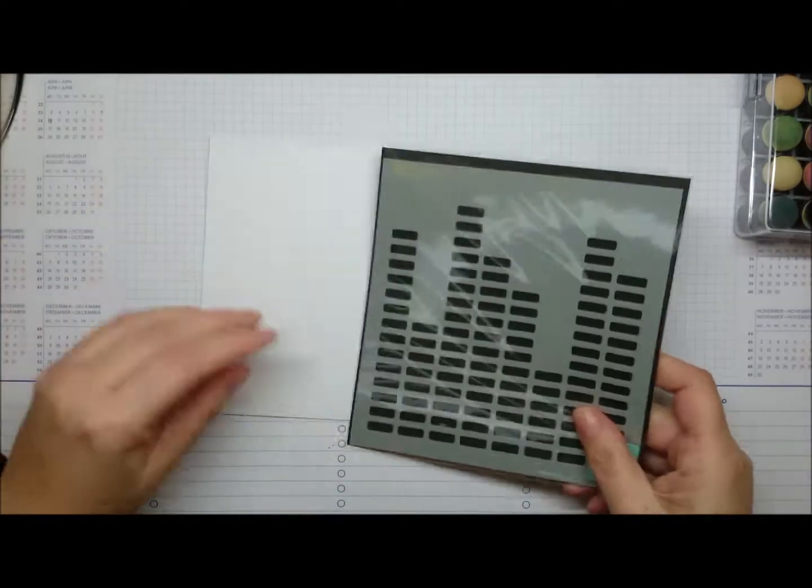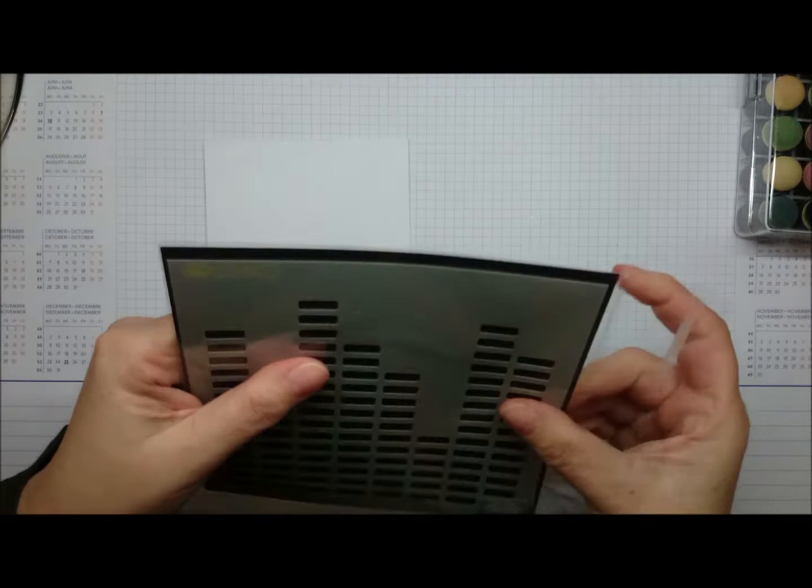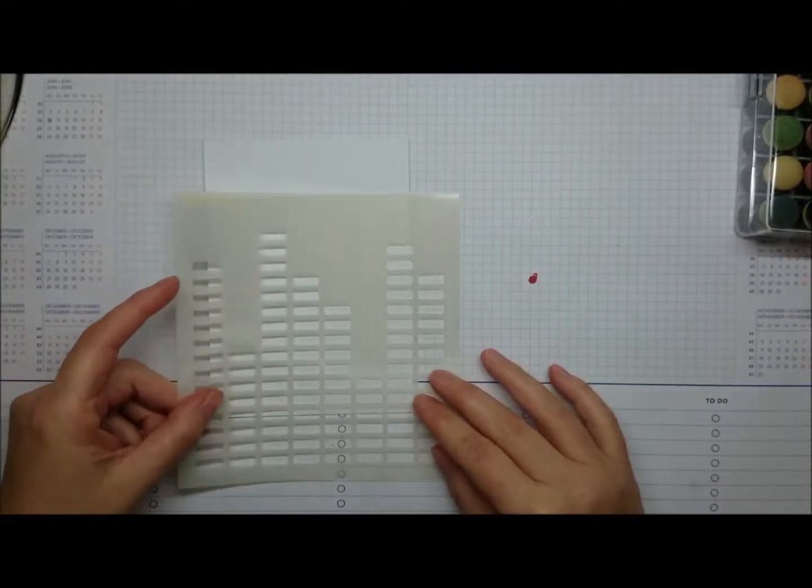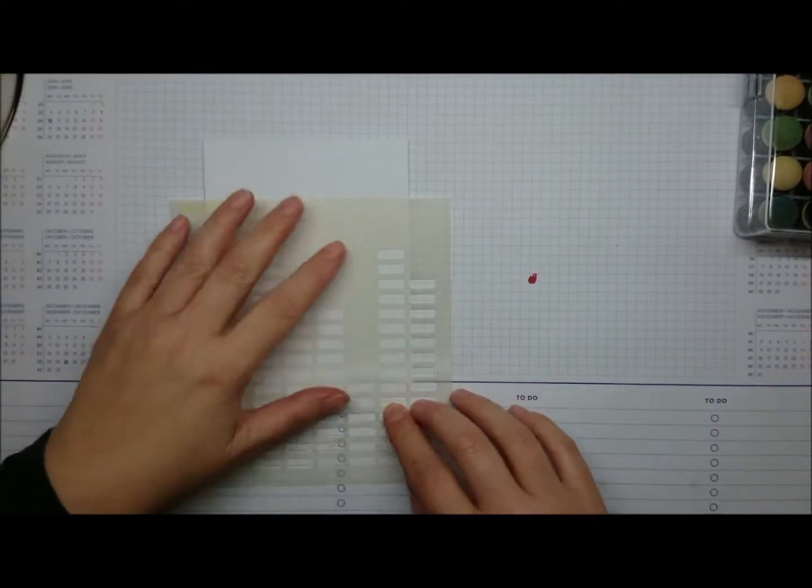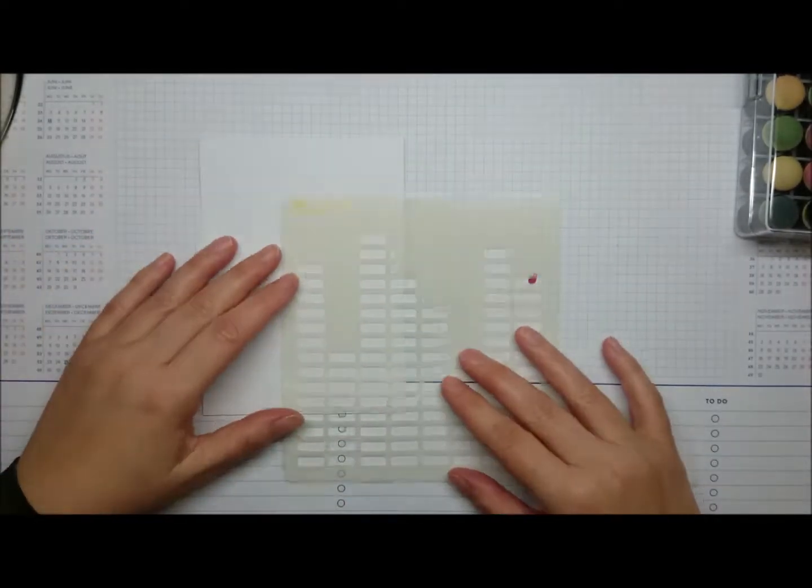I will use distress inks to meet the color palette which is card pumpkin, candied apple, twisted citron, and squeezed lemonade, and then the black pen and black ink for the other color in the color palette.